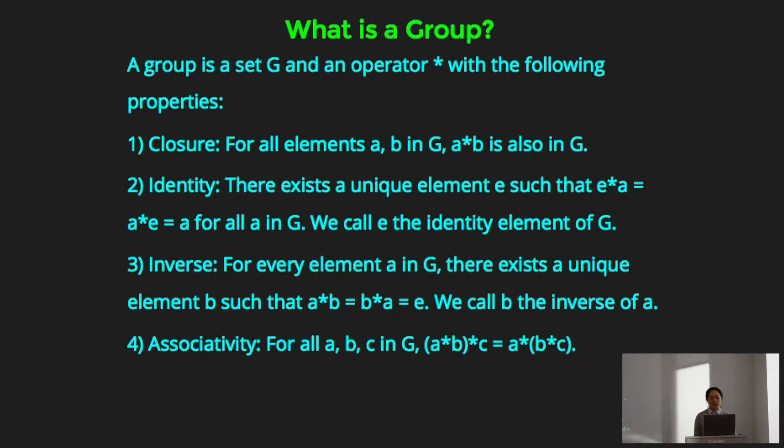Fourth axiom is associativity. So what this means is that if you have any three elements in your group G, if you compose a with b, take the result of that and compose it with c, it's the same as if you're composing a with the result of composing b and c.